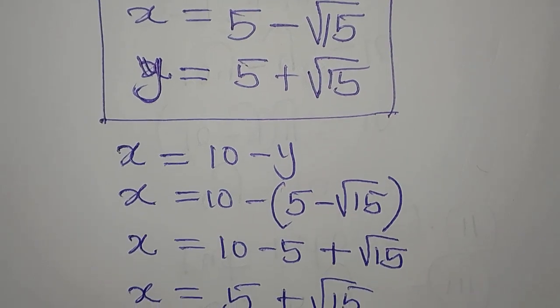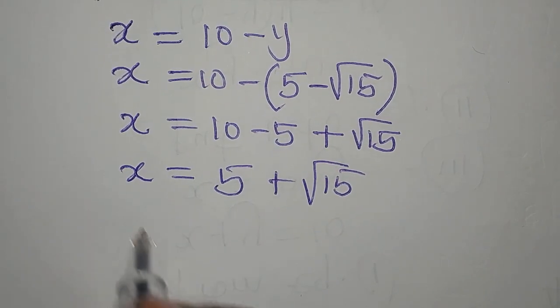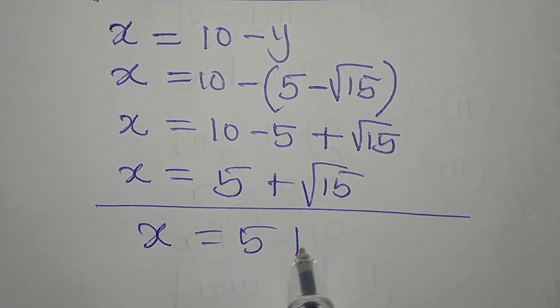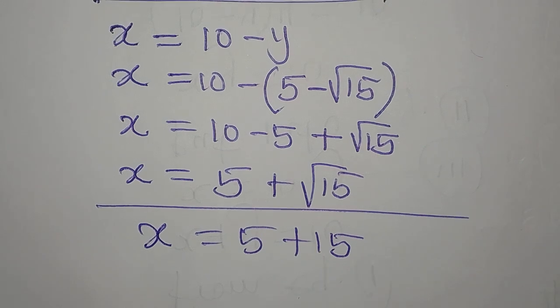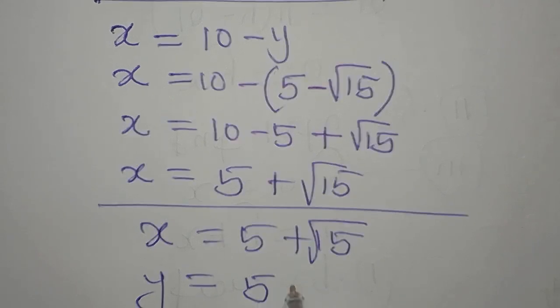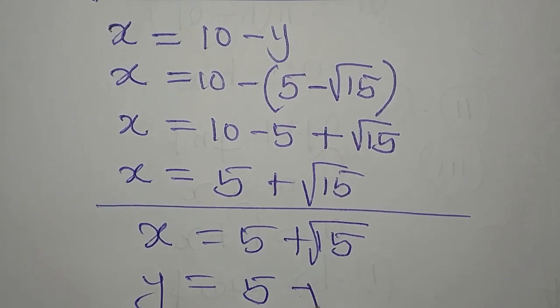And this equally means that when x is 5 plus root 15, our y is equal to 5 minus the square root of 15.